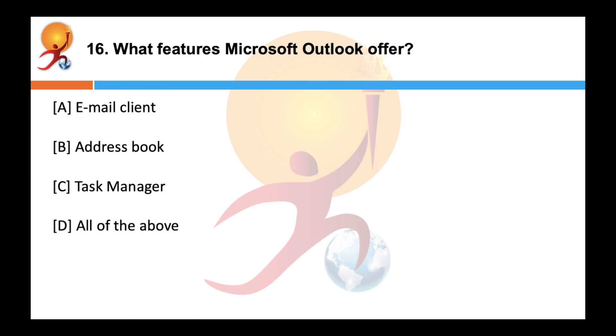What features does Microsoft Outlook offer? The correct answer is D — Microsoft Outlook is a personal information manager that includes an email client, calendar, task manager, and an address book.